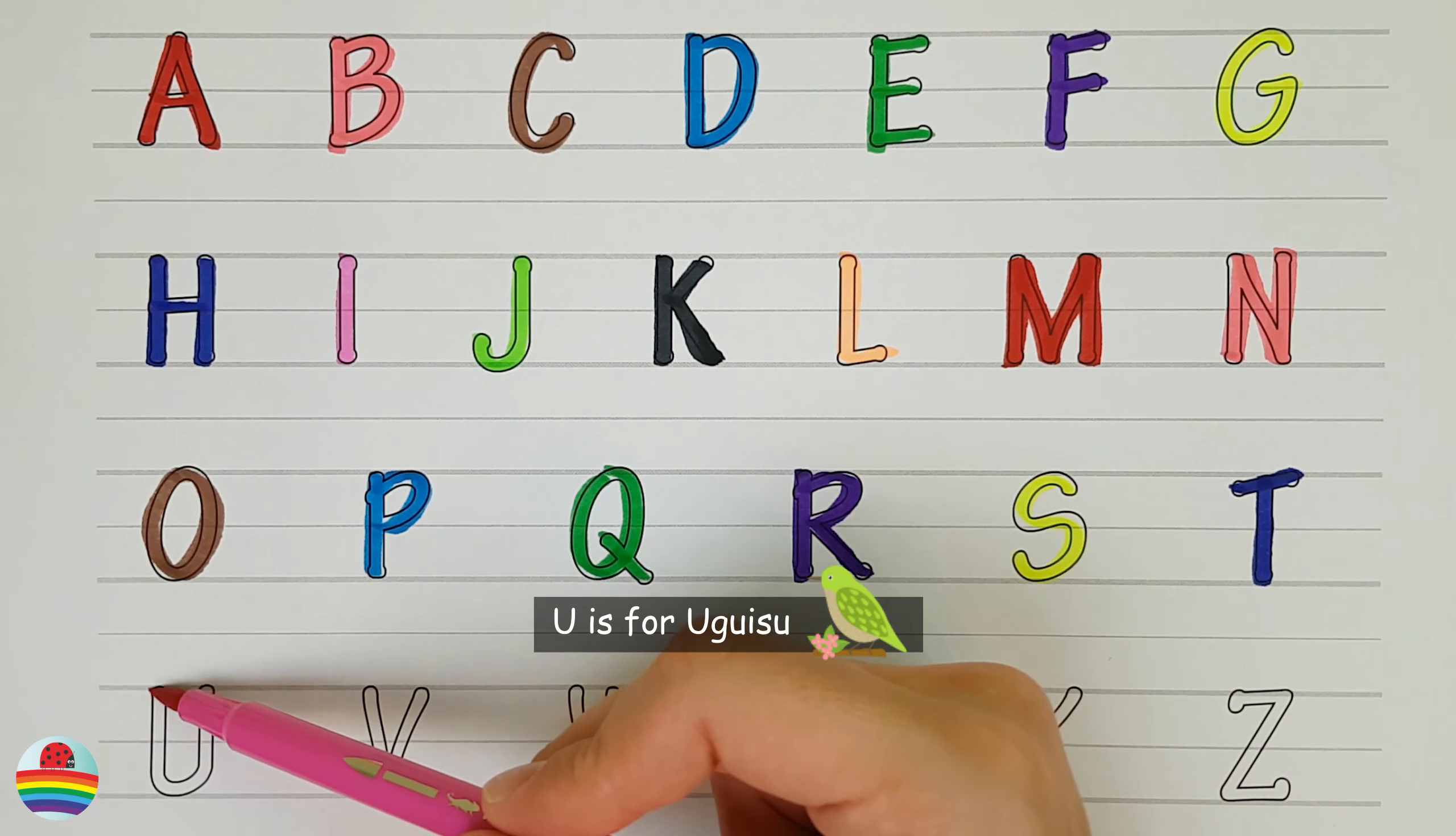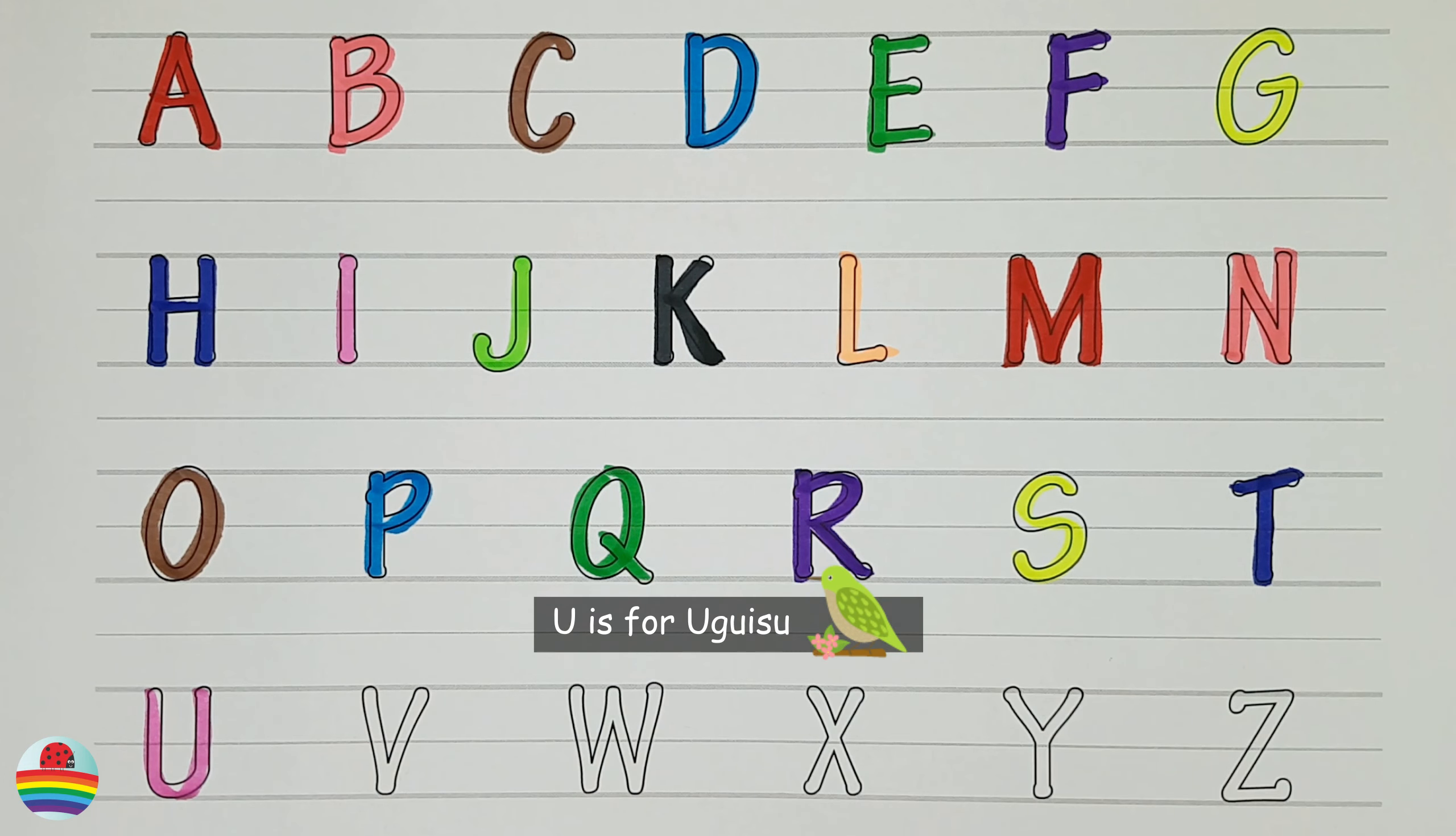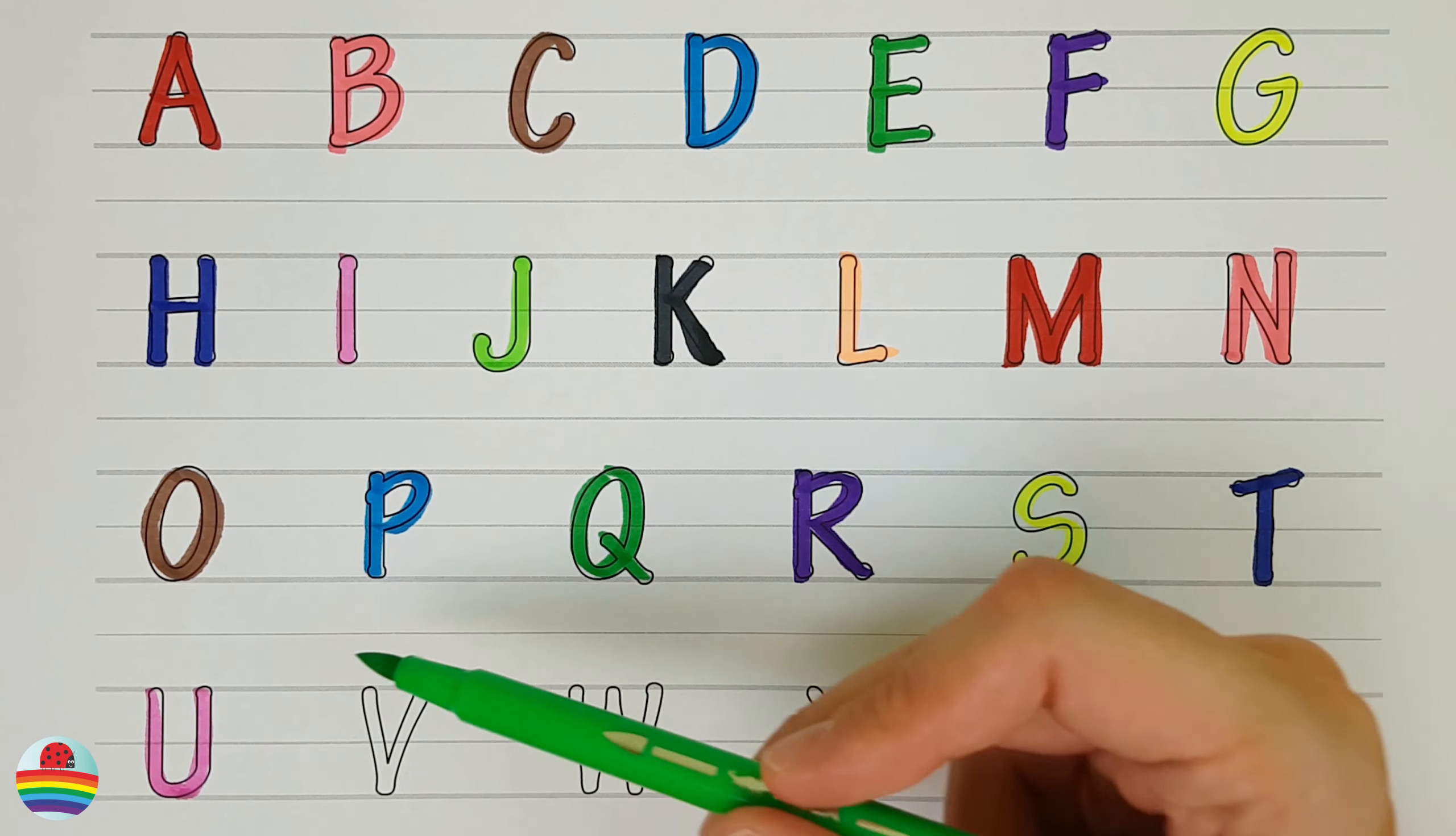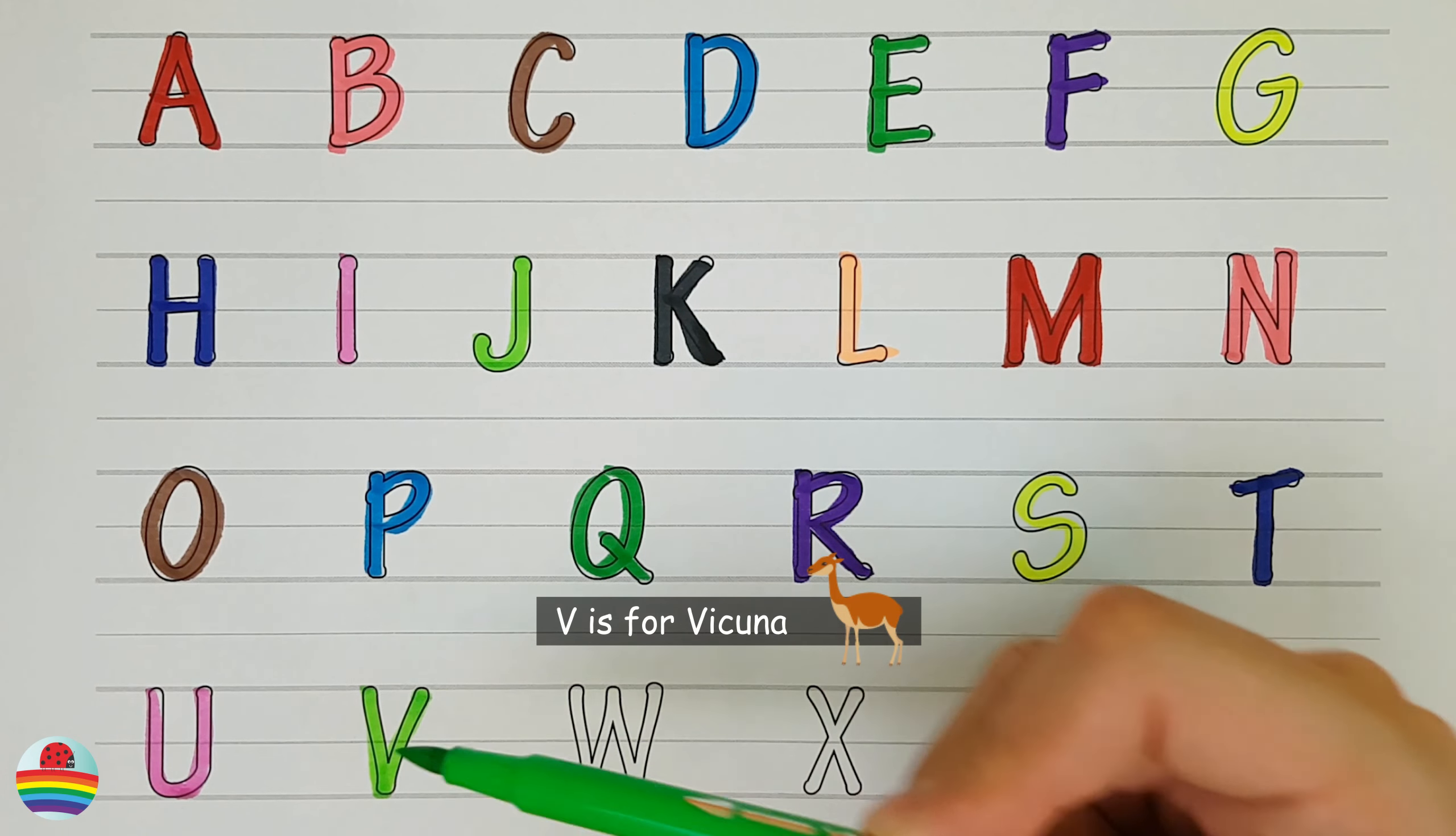U. U is for Uguisu. U. V. V is for Vicuna. V.